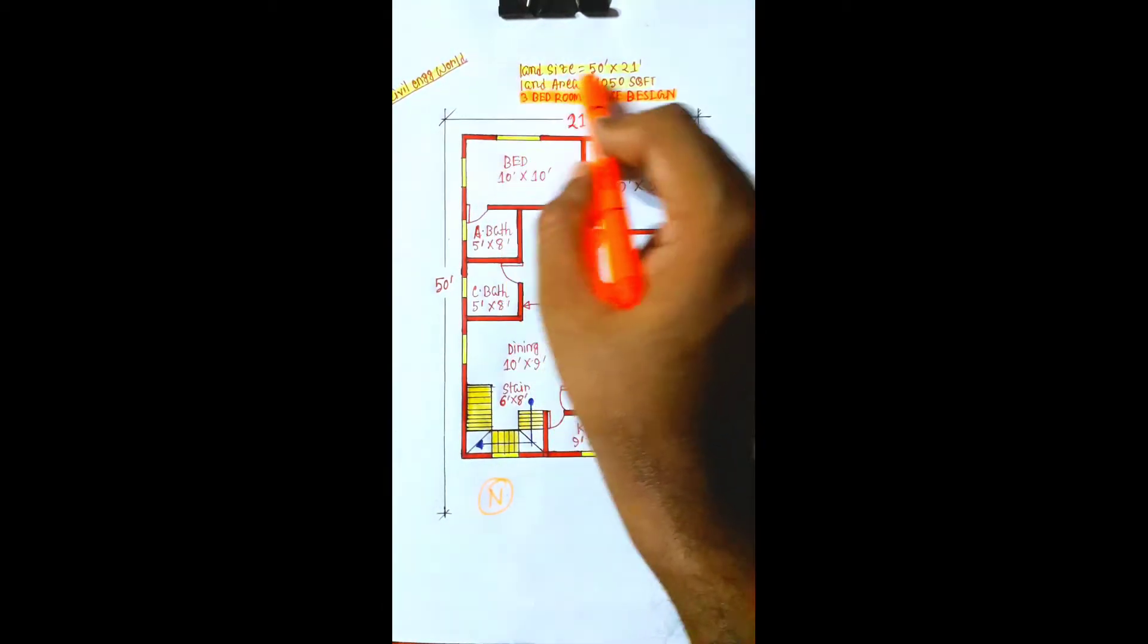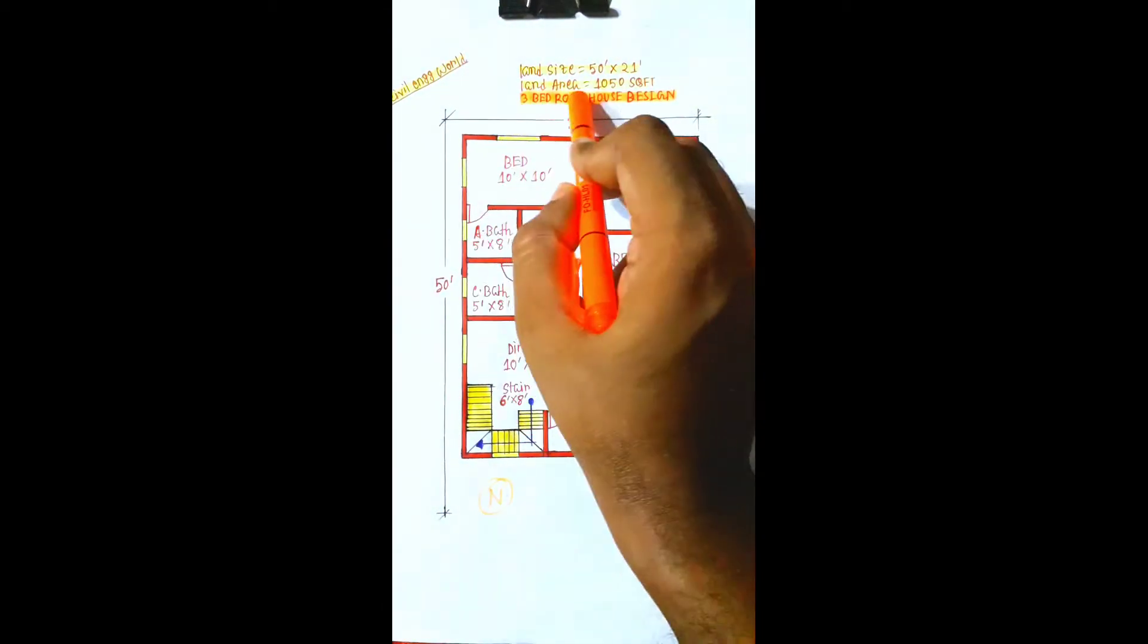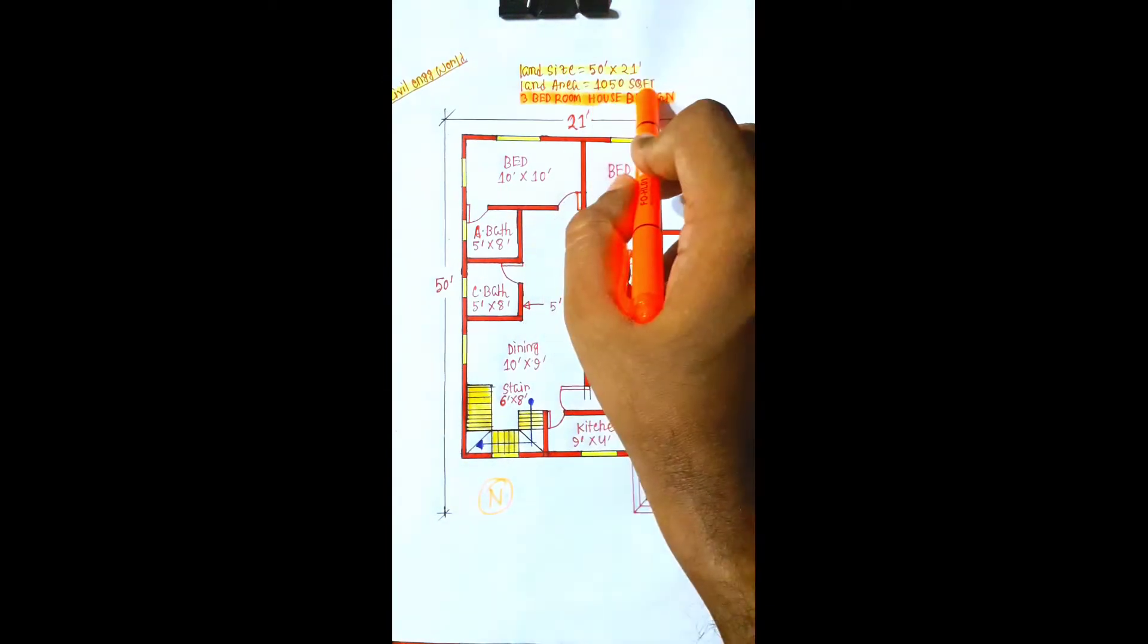Hello friends, this is a 3 bedroom house design. Land size is 50 feet by 21 feet, land area 1050 square feet.